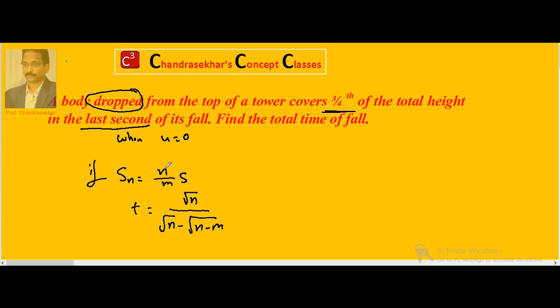So, if I consider n seconds is the last second, then Sn is equal to n by m into S. So, if I apply this concept here n by m is equal to 3 by 4. That means n is equal to 3 and m is equal to 4.